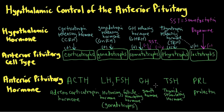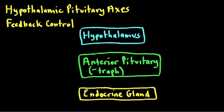Growth hormone and prolactin feedback loops will be covered in another section. Going back to our schematic, the three major elements of a hypothalamic-pituitary axis are the hypothalamus in blue — focusing only on releasing hormones and ignoring inhibitory hormones — the anterior pituitary cell type in green, and the endocrine gland in yellow, which would be either the adrenal cortex, the gonads, or the thyroid gland.